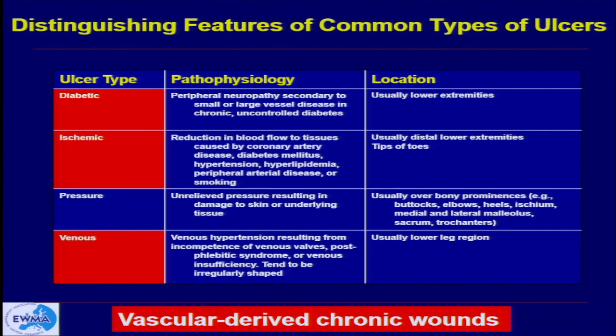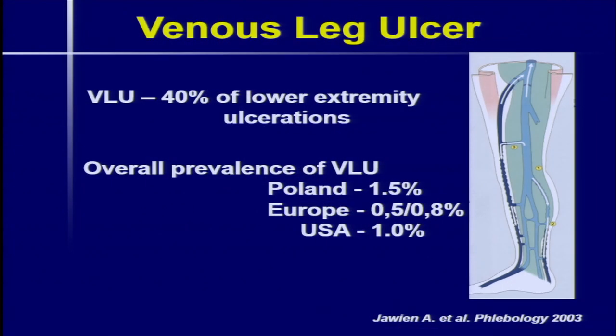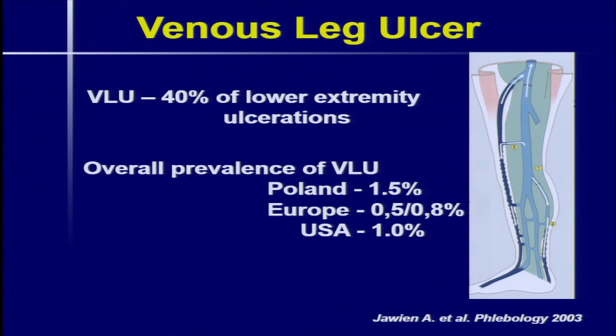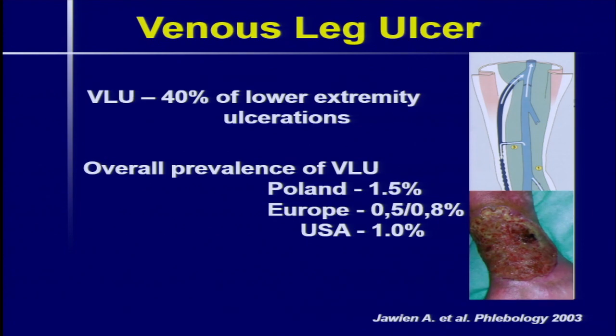Let's look at this and try to understand how it happens that the venous leg ulcer develops. We have heard already, but just to repeat: venous leg ulcers account for 40% of all lower extremity ulcerations. This is really a social problem in every country, not only European countries. We made a very big epidemiological study in 2003, published in Phlebology, and we found that in Poland we have a very high rate of venous leg ulcer at 1.5%, compared to 0.5 to 0.8 in Europe and 1.0 in the U.S. If we look into the venous system of the leg, we have three systems: peripheral, perforators, and the deep one. If everything goes wrong in these systems, the patient can develop very bad ulceration.